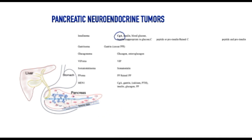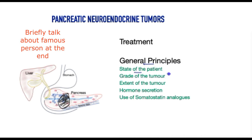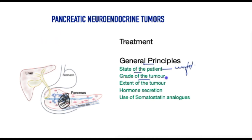Now let's look at treatment options. There are general principles deployed in the treatment of pancreatic neuroendocrine tumours. The first is the state of the patient — treatment is tailored accordingly, and if patients are unfit for any kind of treatment, it is futile to proceed. A biopsy is essential to establish the grade and determine which treatment to deploy. The extent of the tumour, whether it can be surgically removed, and whether it has spread to the liver all inform the surgical strategy.